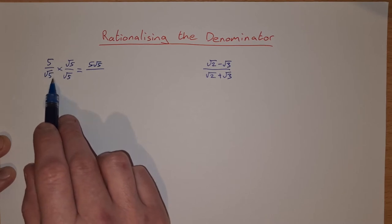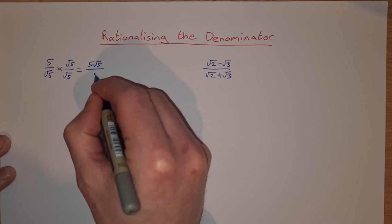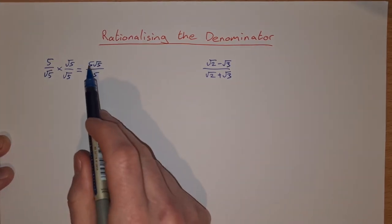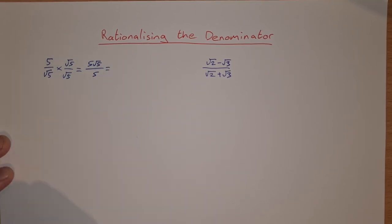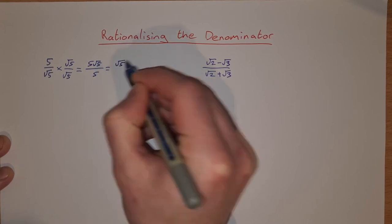So root 5 by root 5 is root 25, and the square root of 25 is 5. So I get 5 root 5 over 5, and then you can see that these 5s cancel with each other, or we can divide above and below by 5, and we end up getting root 5 over 1, or just root 5.